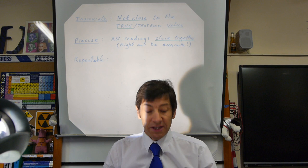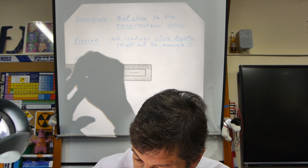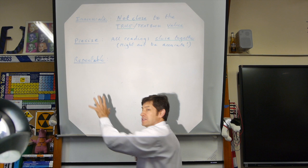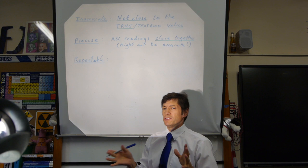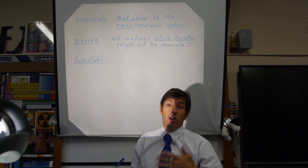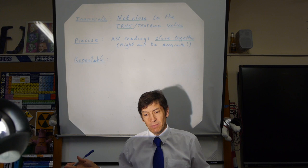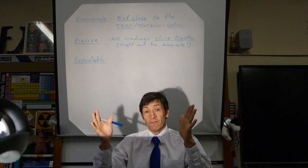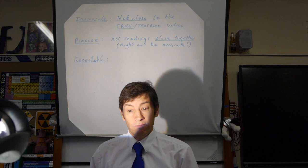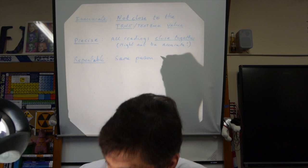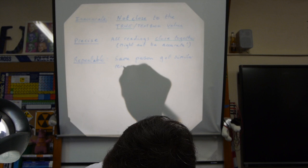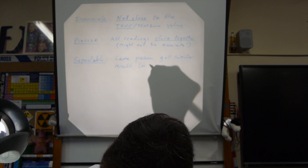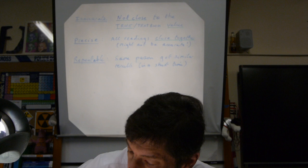Now let's look at what we mean by repeatable. If you repeat the experiment yourself over a short time period - doing it in the lab and redoing it half an hour later, or three or four times in ten minutes - it's the same person or in big science the same team, over a very short time period. If the same person gets similar results, the experiment is repeatable. The speed of sound experiment we did was repeatable - measurements made over about a ten-minute period.